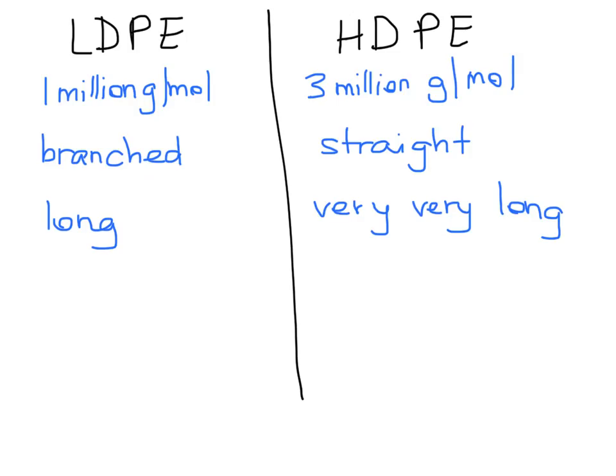So let's do a quick comparison between the low density polyethylene and the high density polyethylene. So low density polyethylene tends to be at 1 million grams per mole, whereas the high density, being much longer chains, are going to be at the 3 million grams per mole. Low density polyethylene is going to be branched. So it has the ability to back in on itself. So it tends to have a structure that kind of looks like this, whereas the high density polyethylene is going to be a very straight-chained molecule.